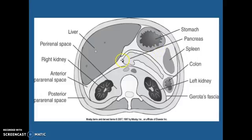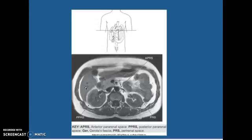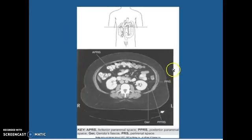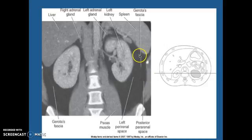Stomach, spleen, colon. Your Gerota's fascia comes around and you can actually see it on some of the images. Left kidney, right kidney, posterior perinephric space. You have your anterior perinephric space and your liver up top. I want you to know what Gerota's fascia is. Anterior perinephric space and you have your posterior perinephric space back here. You can see that line right there — that's the Gerota's fascia — and you can see the faint line on the other side also.